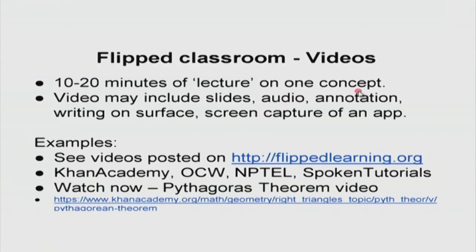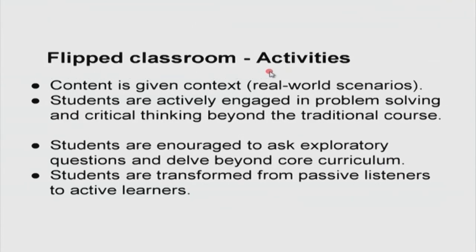In that video you saw Professor Sridhar explaining the limitations of a traditional classroom and the advantages you get when you flip the classroom in the right way. Now moving to the next video — flipped classroom and active learning. A flipped classroom video is created for a short duration, about 10 to 20 minutes, or sometimes even 5 minutes. In that video one concept is explained — like the basic idea of the Pythagorean theorem: a squared plus b squared equals c squared, where a and b are the two sides.